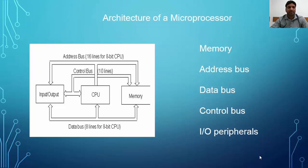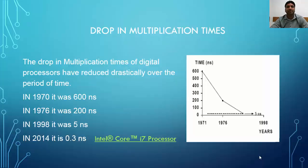The input-output peripherals manage communication between all the peripherals. From the time the microprocessor was invented, there has been a continuous drop in processing times of multiplication, and it is now processed in 0.3 nanoseconds by the latest Intel Core i7 processor. It is clearly evident that this revolutionary device has changed the technology world.